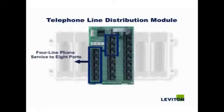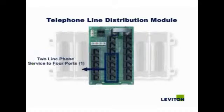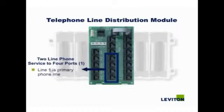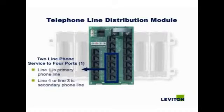These are your telephone ports. They provide four-line service to eight ports. Lines 1 through 4 provide two-line phone service to four ports. Line 1 is the primary phone line, and line 4 or line 3 is the secondary phone line, respectively.